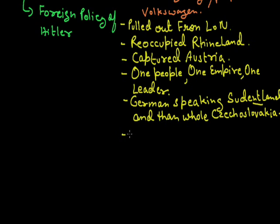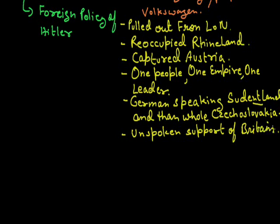One by one Hitler kept capturing new areas of Europe and increasing his power. Britain was not objecting to anything Germany was doing. This was seen as the unspoken support of Britain to Germany. The British people thought that Germany had faced a lot of insults and that the Treaty of Versailles had been very unfair to Germany, which is why Britain said nothing about Hitler's actions.